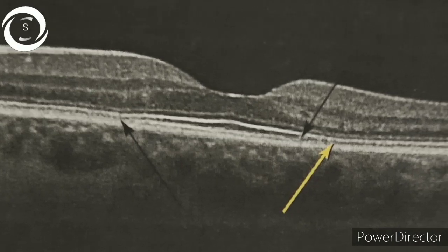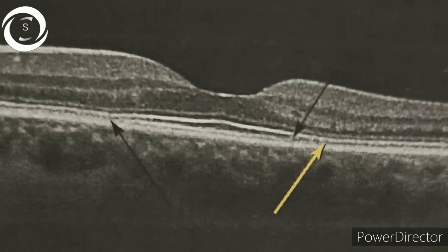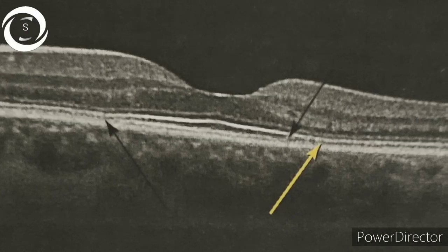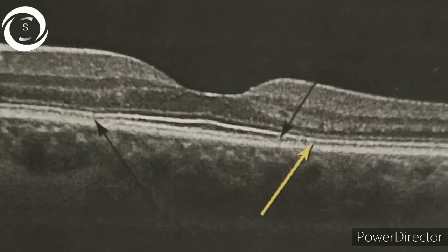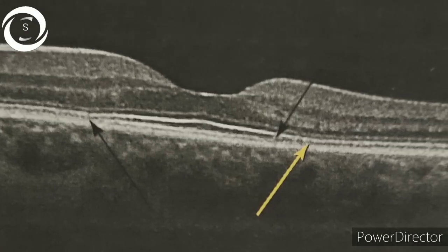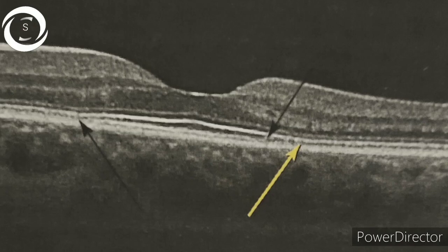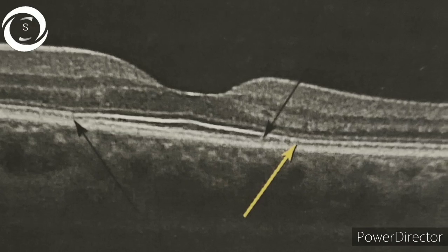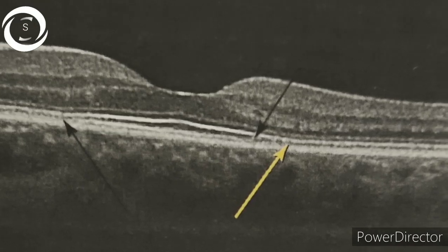In the eighth OCT, the scan appears normal, but if you look closely there is para-foveal outer retinal thinning and disruption of the ellipsoid zone. The signs are more evident temporally than nasally. This is hydroxychloroquine toxicity.